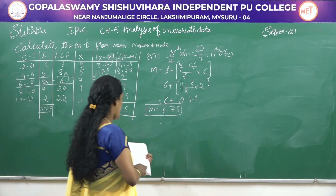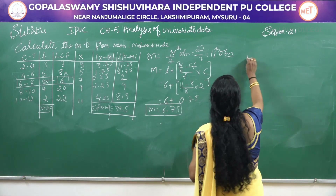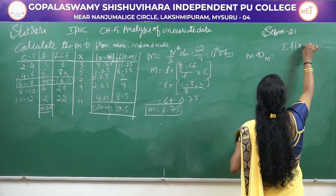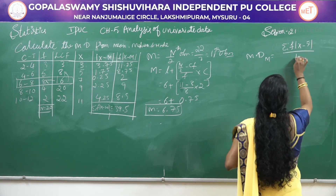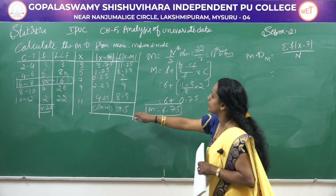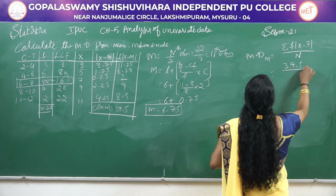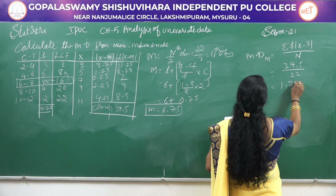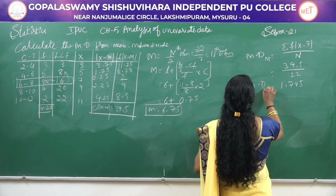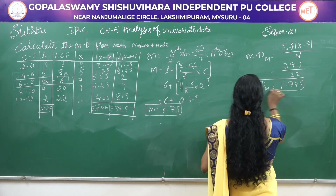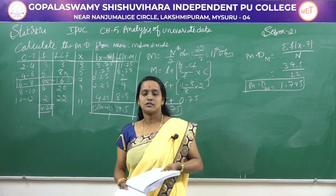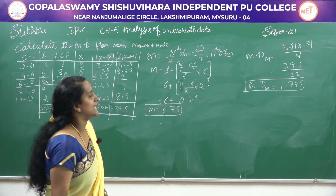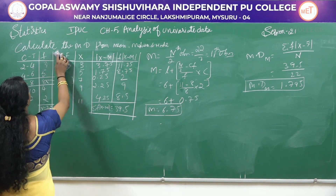The formula to find mean deviation using median is: Σf|x − median| / N. This summation value is 39.5 and N = 22, so mean deviation using median = 39.5 / 22 = 1.795. This is mean deviation using median.